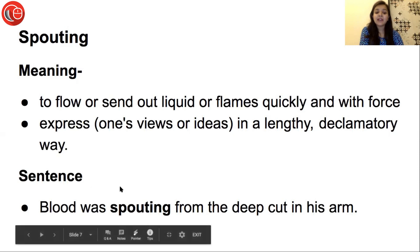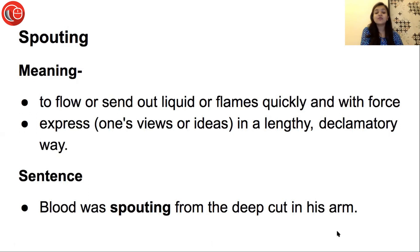Sentence: Blood was spouting from the deep cut in his arm. उसके arm पे जो बहुत गहरा cut लगा हुआ है, उसमें से बहुत तेज़ी से blood — liquid — blood is flowing out.